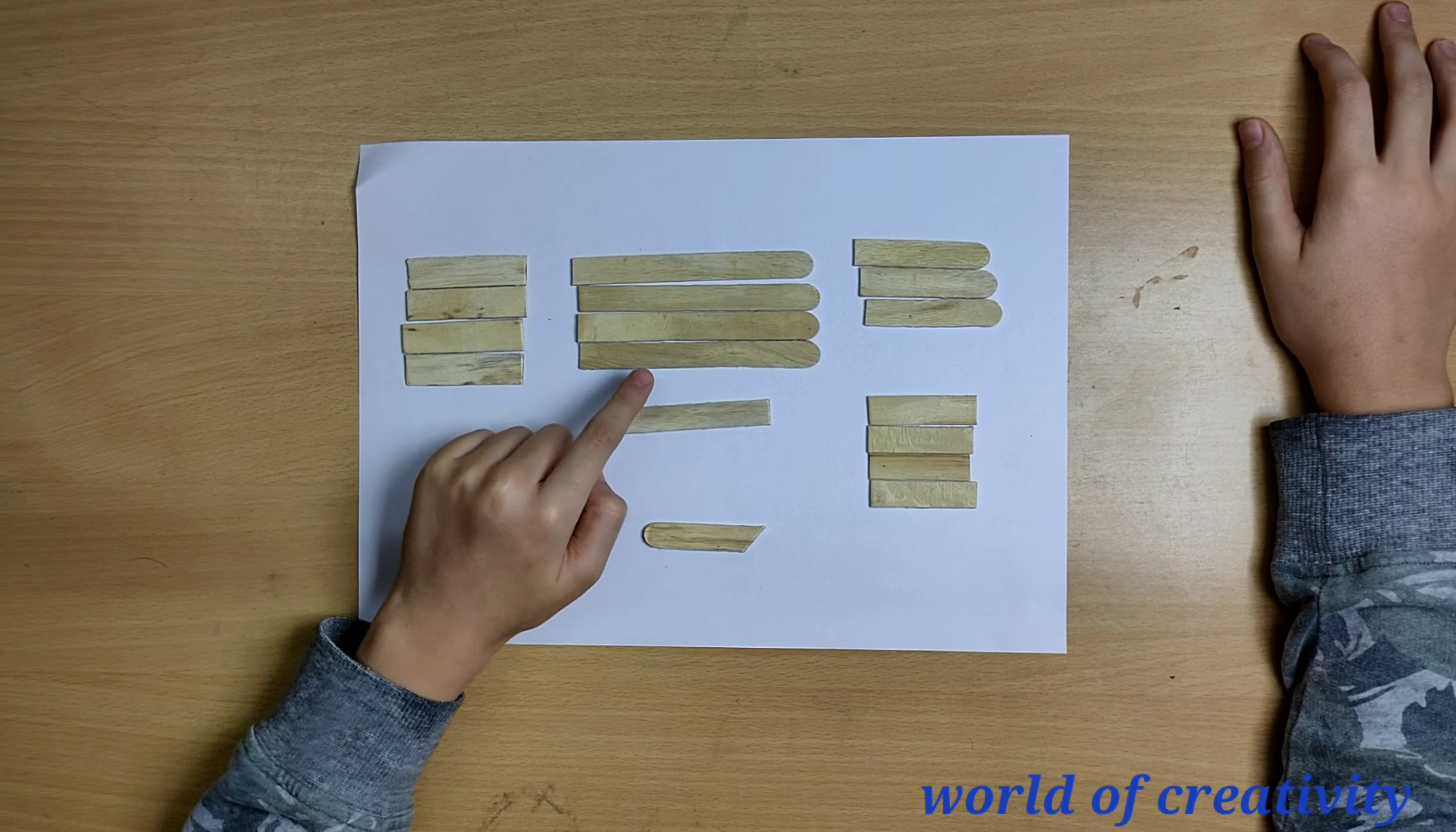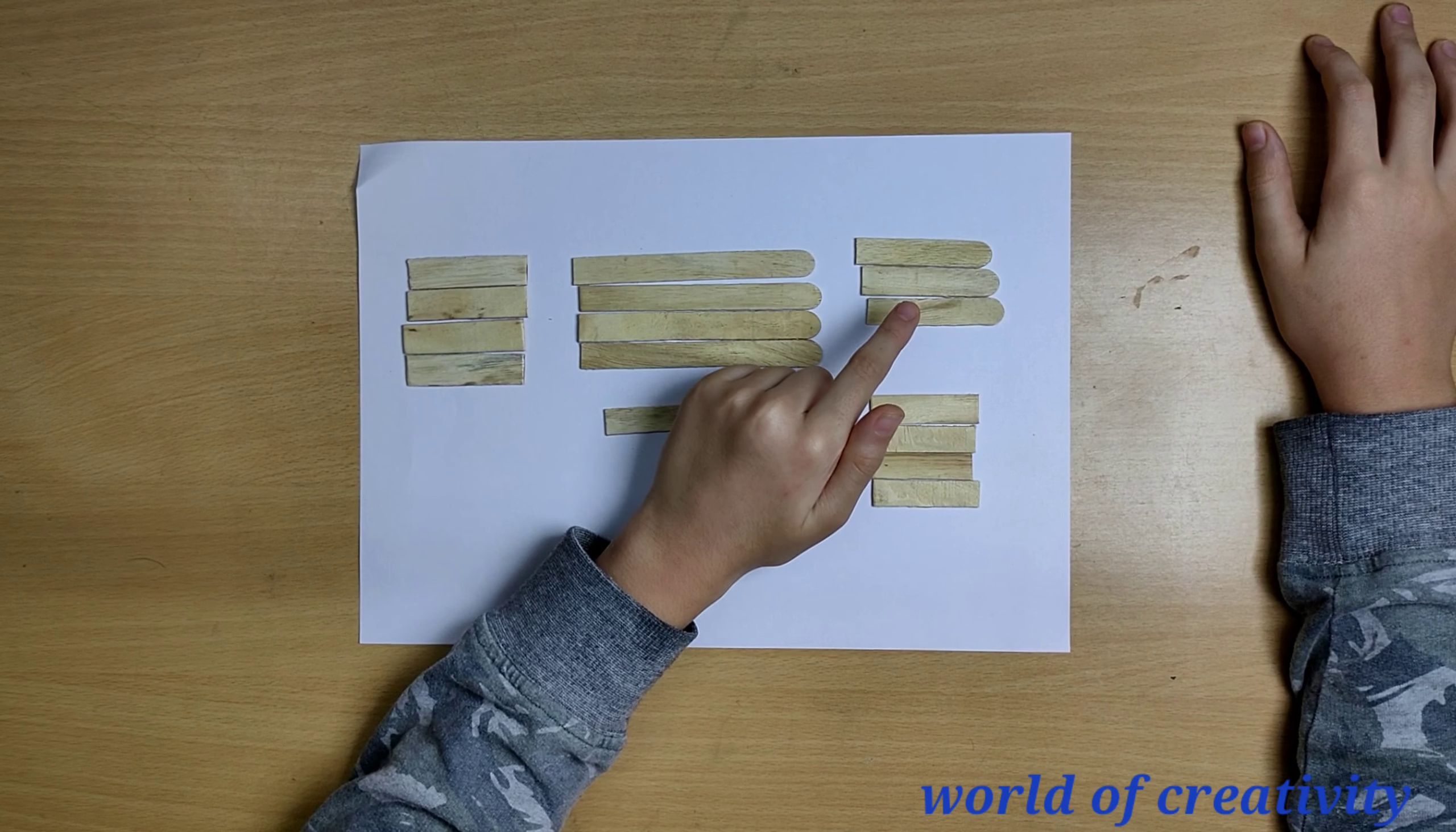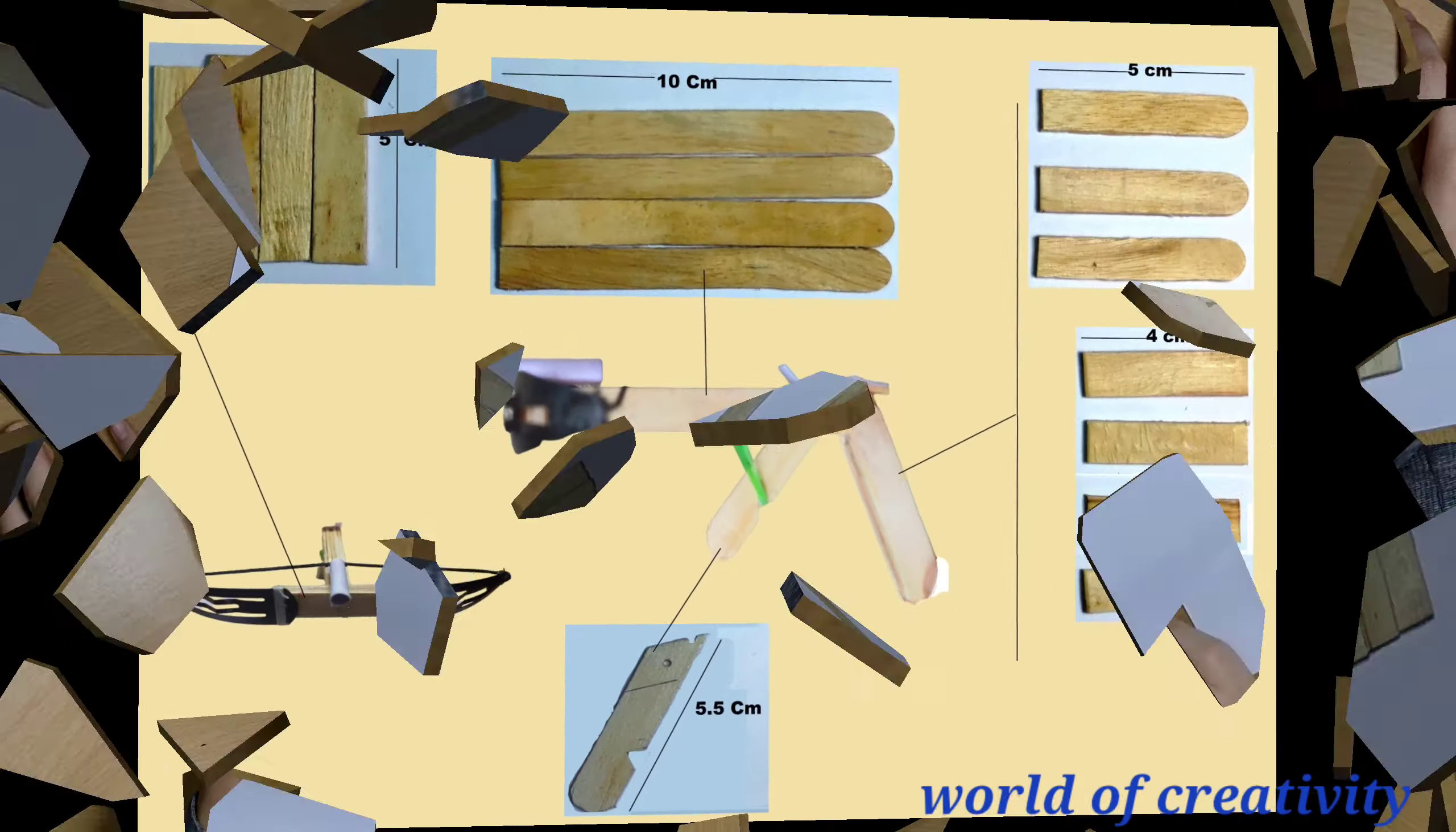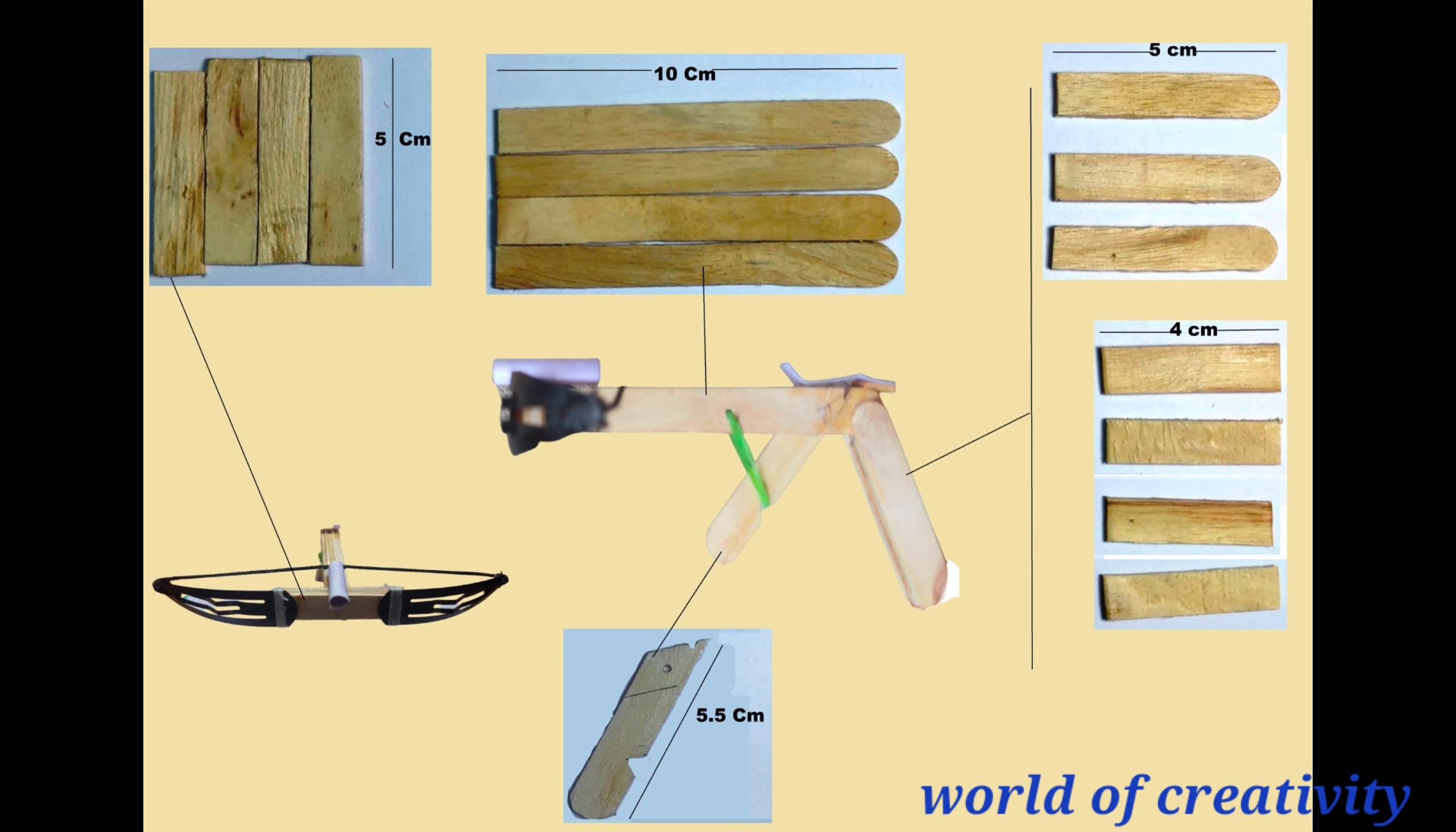This is for the front part. This is for the middle part. This is for the rear part. And this is the trigger. You can use this template to cut your popsicle sticks.